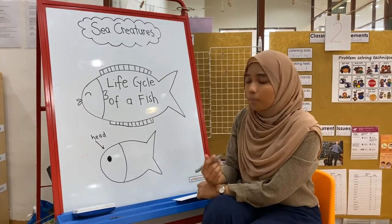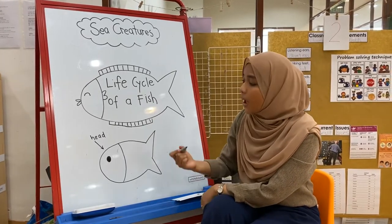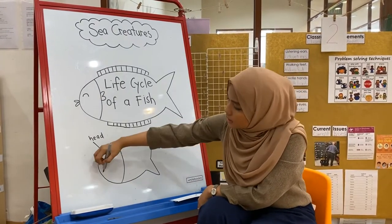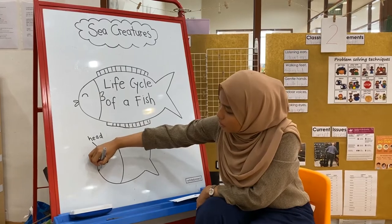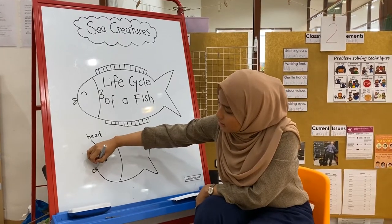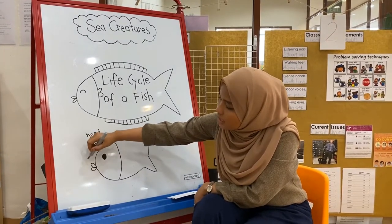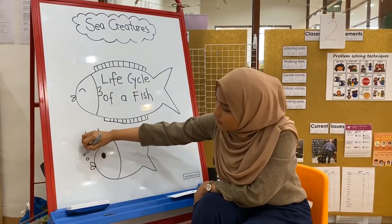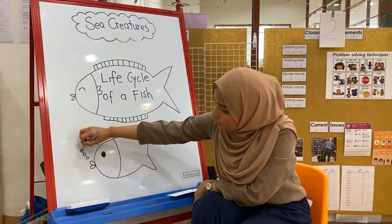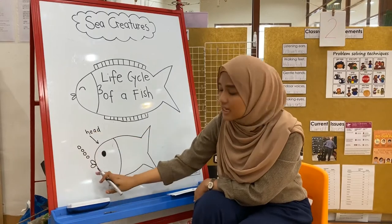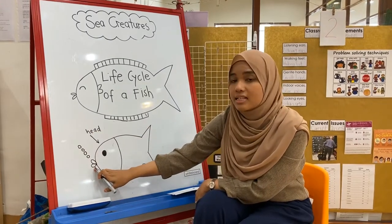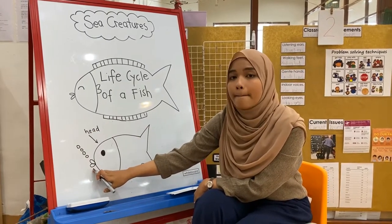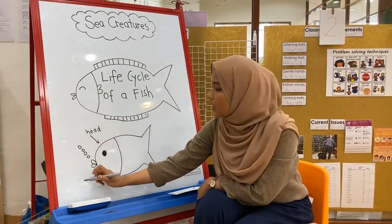Moving on, I'm going to draw their mouth. So I'm going to draw it like this, and I'm going to add some bubbles. Let's say together: this is the mouth.